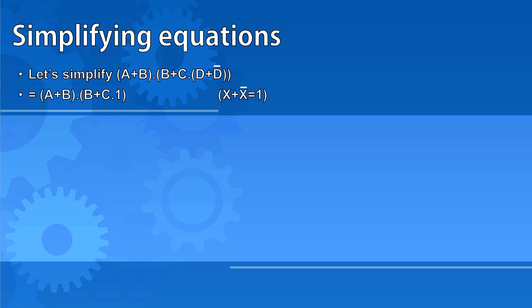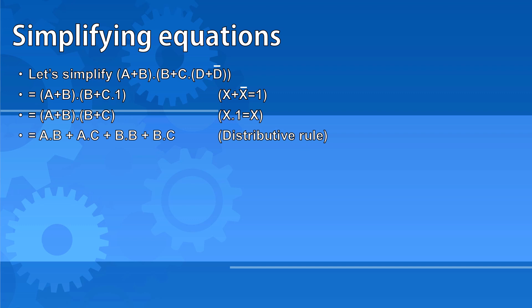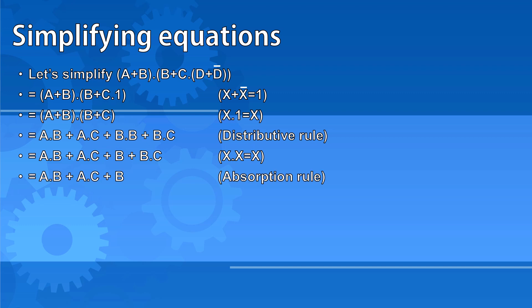Next, I note that something AND one is always going to be equal to just something, so I make that change and specify the rule I've applied. Next, I use the distributive rule to expand out my terms. Now I can spot another rule — b AND b is going to be just equal to b, so I make that change. Now the absorption rule tells me that b OR the result of b AND c is the same as just saying b. Using the commutative rule, we can rearrange these so we can see another pattern. Finally, we apply the absorption rule once more, and now we have this equation in the simplest form it can be.